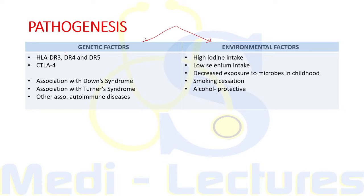Genetic factors include HLA-DR polymorphism, especially HLA-DR3, DR4, and DR5, and polymorphism of CTLA4, which is a T-cell regulatory gene. Patients with Down syndrome have increased risk of Hashimoto's thyroiditis, possibly due to a gene on chromosome 21. Associations are also seen with Turner syndrome, and female preponderance may be due to some gene on the X chromosome, although these theories are not confirmed.